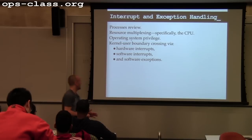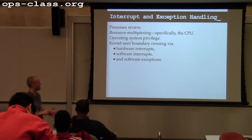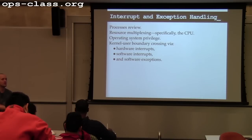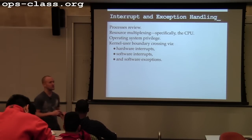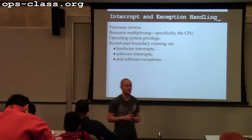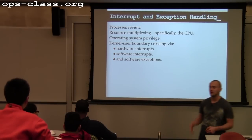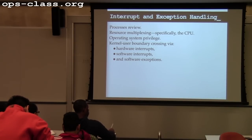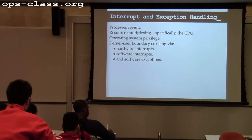We'll talk about how the operating system interacts with the CPU, and about CPU mechanisms that exist to allow the operating system to do things it needs to do. We'll talk about abstractions the OS creates to allow processes to use the CPU, and the illusions it creates about the CPU. Then we'll talk about policies related to the CPU, specifically process scheduling.